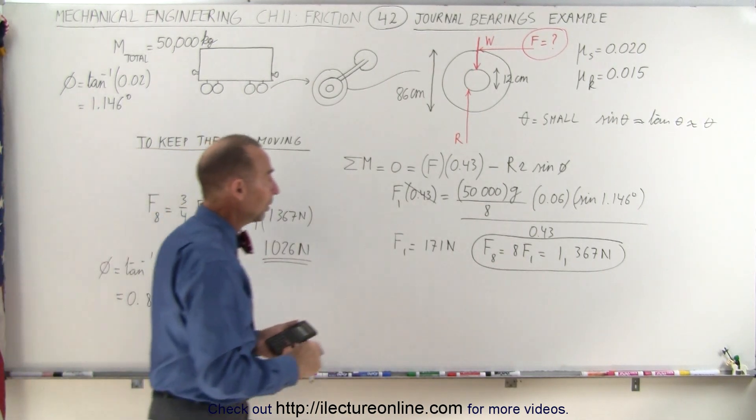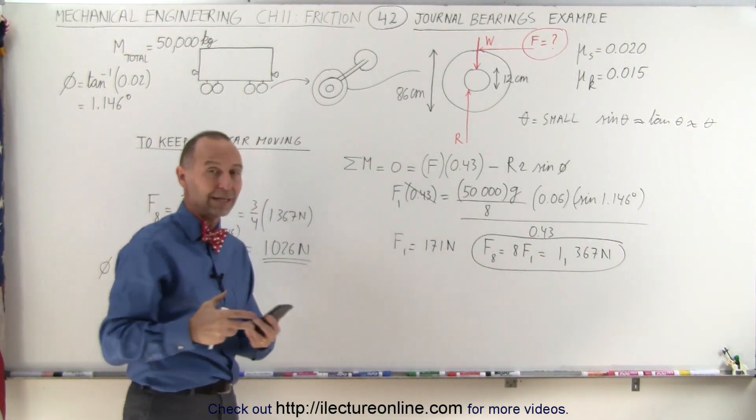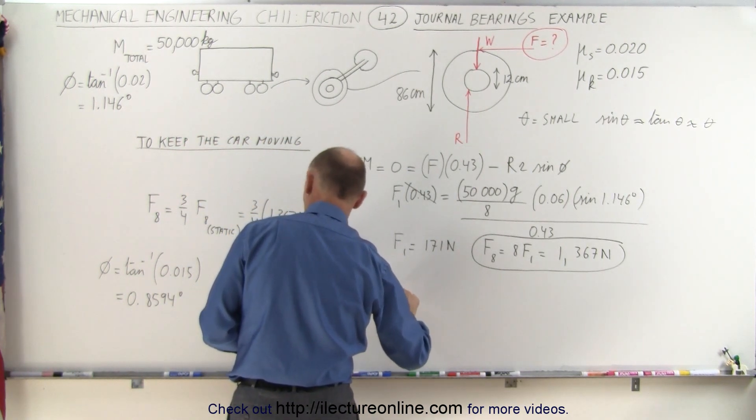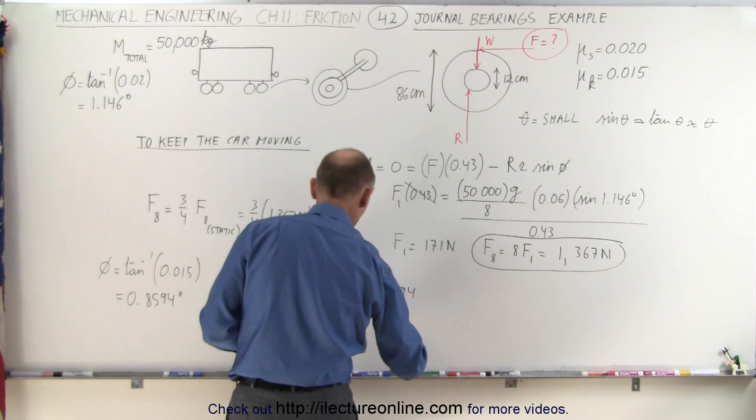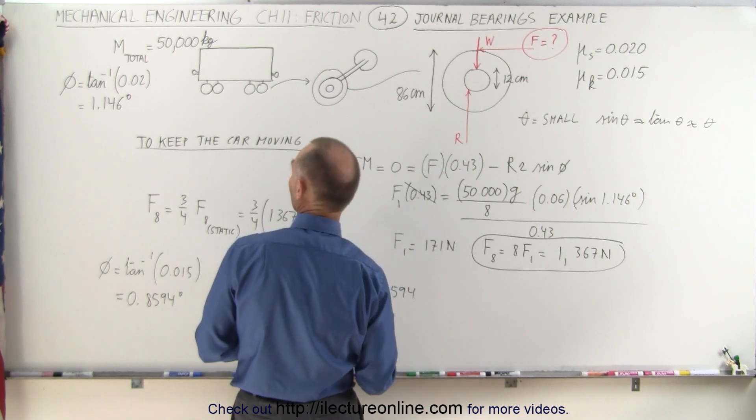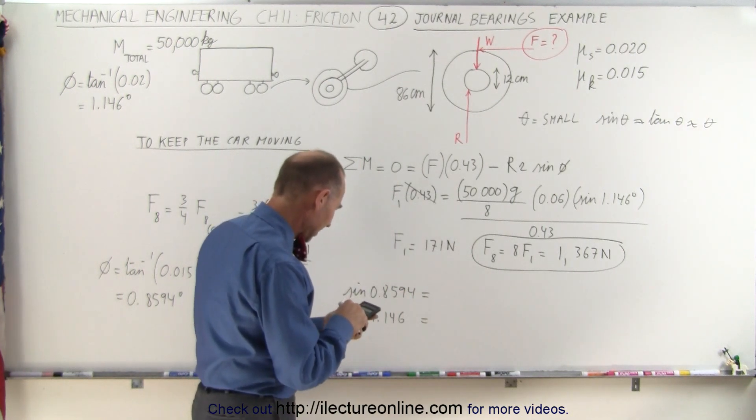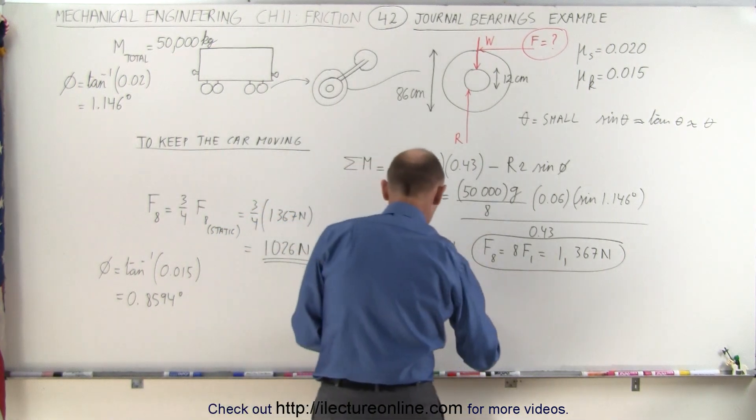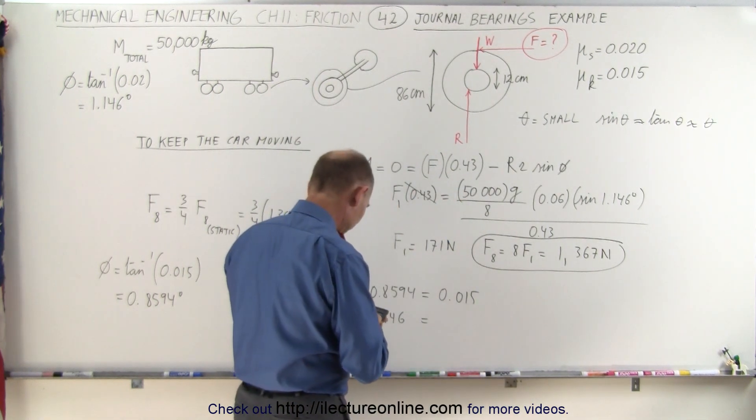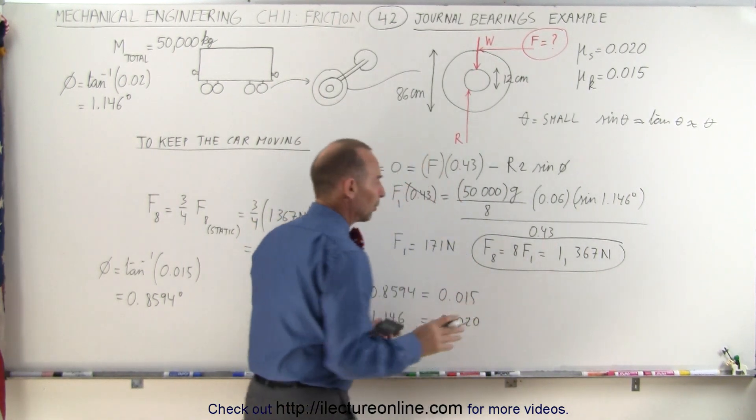And then if we plug in the sine of this versus the sine of this, notice that the values of that will be a difference of three quarters. In other words, the sine of 0.8594 versus the sine of 1.14, where am I here? 1.146 is equal to, so take the sine of that, that gives me 0.015 and take the sine of that, 1.146, take the sine of that, I get 0.020.